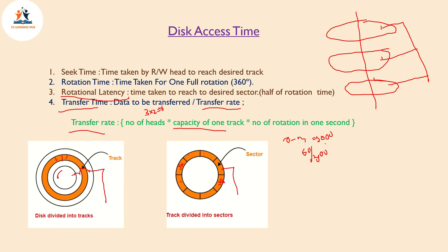Access time is seek time plus rotational latency plus transfer time plus control time. The important points are: seek time, rotational latency, transfer time — these are all important components of disk access time.